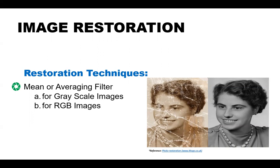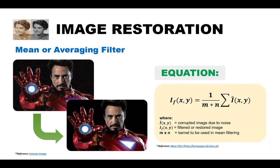In this section, we will be tackling the mean or averaging filter, which is used to restore noisy images. The mean or averaging filter is one of the smoothing spatial filters used for blurring and noise reduction. Blurring is used in pre-processing tasks such as removal of small details from an image prior to large object extraction. It is also called the box filter because the kernel used is like a box, and another name is the low-pass filter, as it simply averages the pixels contained in the neighborhood of a filter mask.